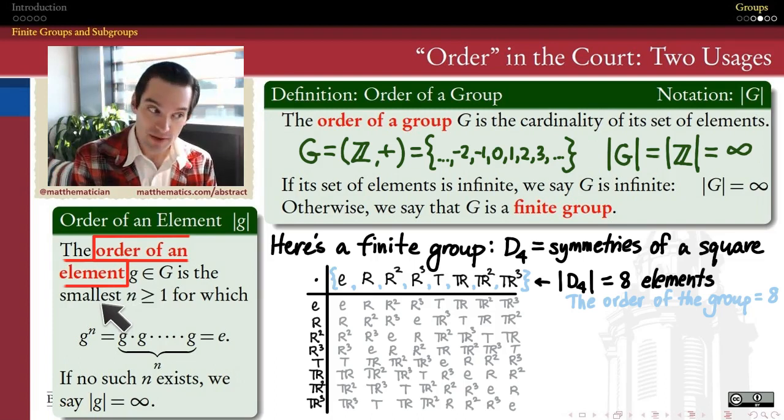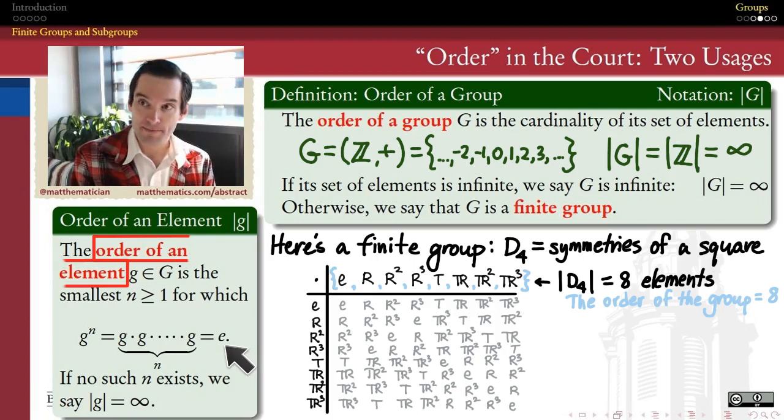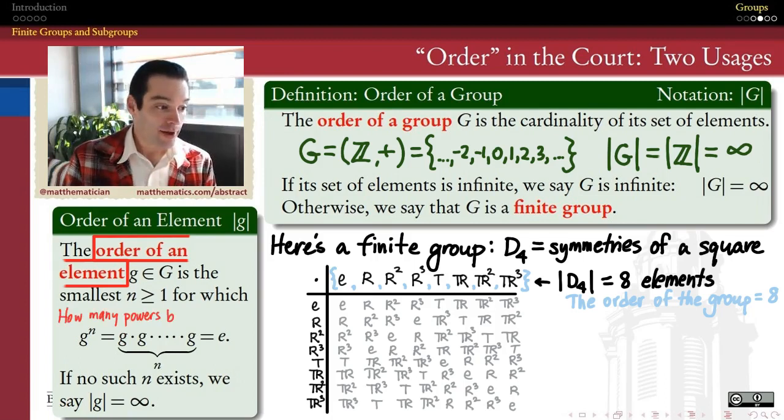And the order of an element is an answer to the question, how many times do I have to multiply that element by itself? What power of that element is going to give me the identity? And it should be a little bit surprising that this always has a finite answer inside of a finite group. But that's all that it is: how many powers of g do I have to make before that power vanishes and just becomes the identity again?